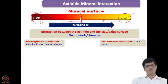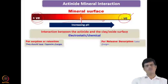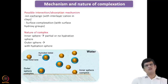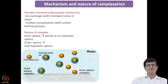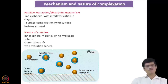For adsorption or retention, the mineral surface and the binding actinide ions should have opposite charges. If you want the species to be released or dissolved from the mineral surface, they should have the same charge, in which case they will be released. The mechanism and nature of complex formation are of two types: one is ion exchange where the interlayer cation in clays is replaced by actinide cations, and the other is surface complexation with surface hydroxyl groups.